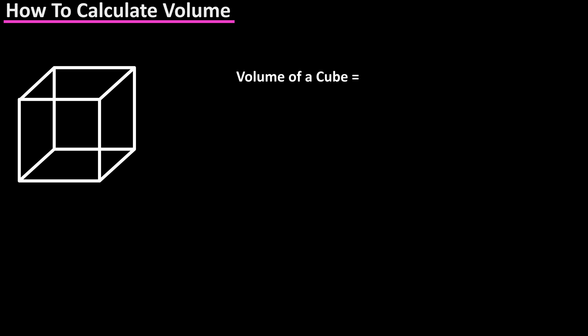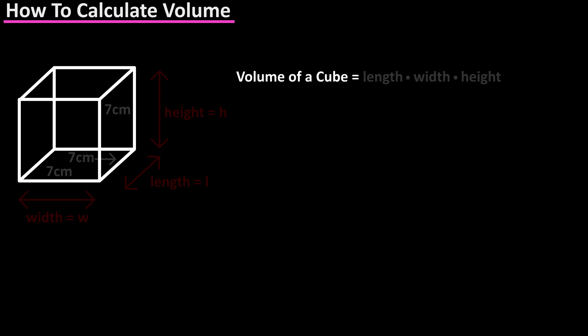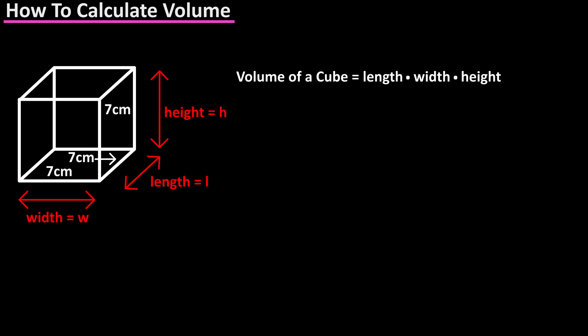The formula for calculating the volume of a cube is length times width times height, so the volume equals L times W times H. From this diagram we have 7 centimeters times 7 centimeters times 7 centimeters, which is 343 centimeters cubed, because there are 3 centimeters in the multiplication.